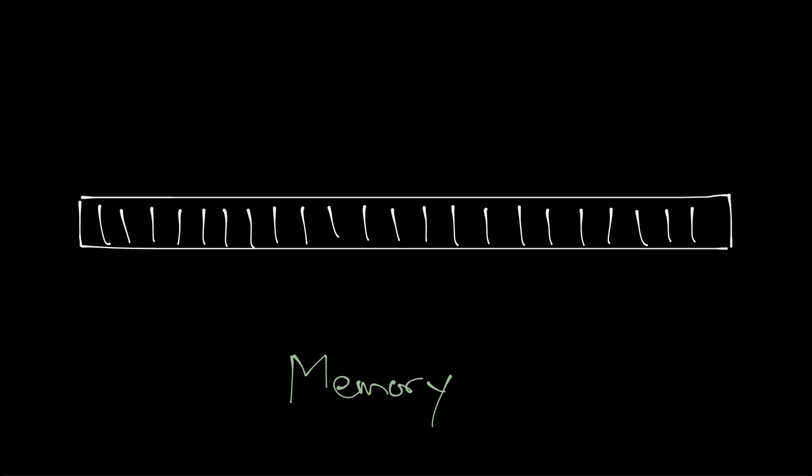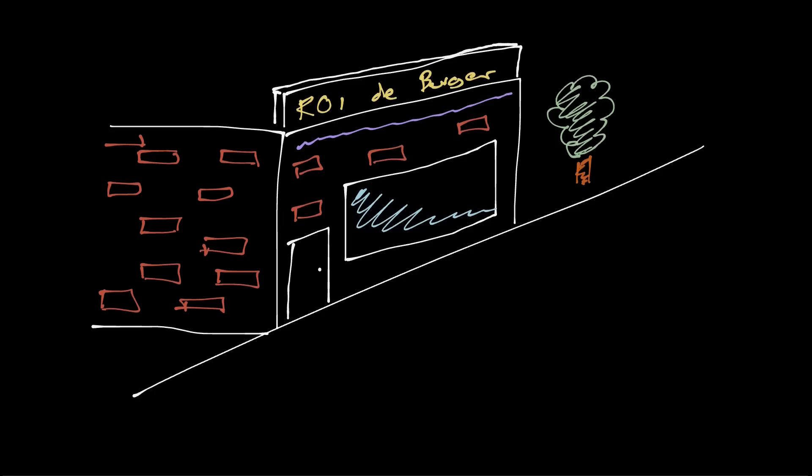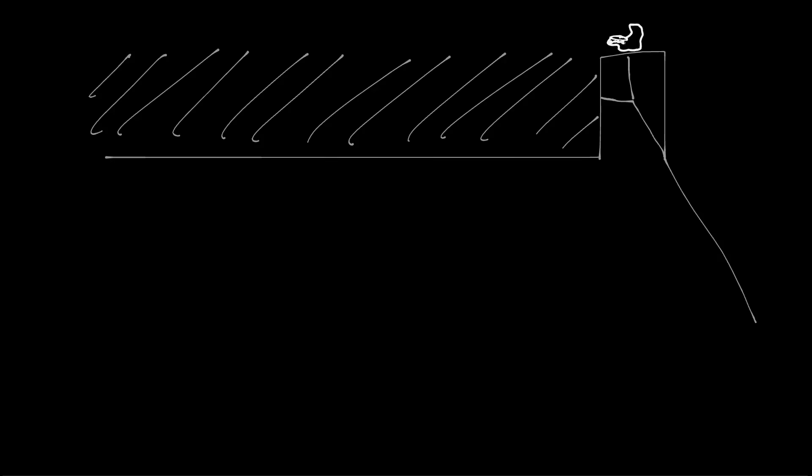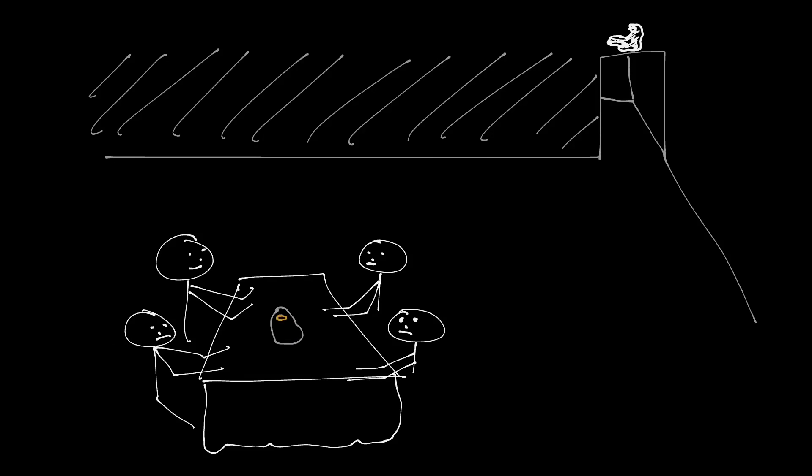If you think about memory as this gigantic series of slots, each of which holds one byte, and this is all ordered sequentially, there's a few ways of rationing out memory that emerge pretty naturally. Imagine your family is out to eat at a fancy restaurant. So your party arrives, and you ask the maitre d' for a table for four. There's room, so you all get seated at a nice table far away from the bathroom.